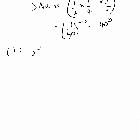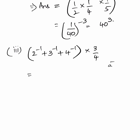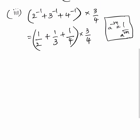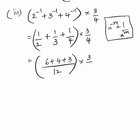Third part: 2 power minus 2, plus 3 power minus 1, plus 4 power minus 1, into 3 by 4. That is equal to 1 by 4 plus 1 by 3 plus 1 by 4, into 3 by 4, that is equal to 13 by 12 into 3 by 4, which gives 13 by 16 as the answer.